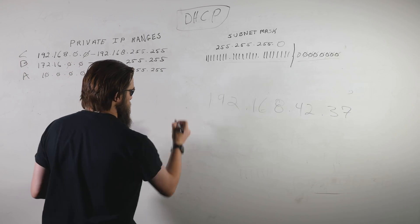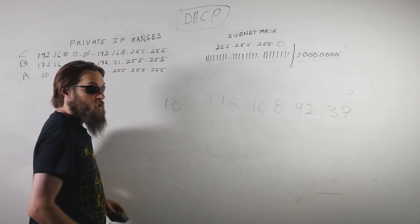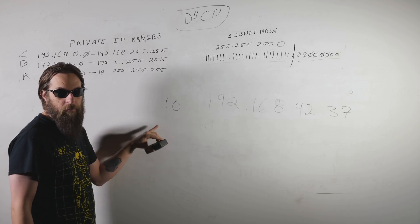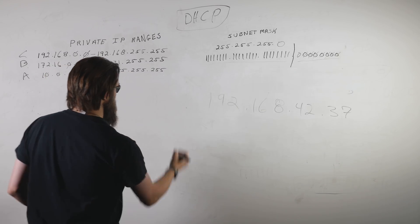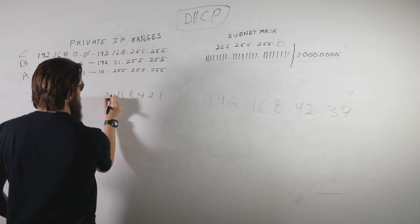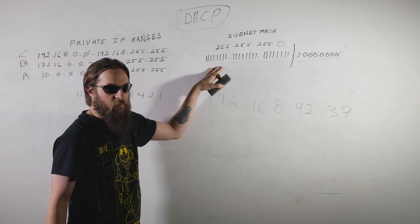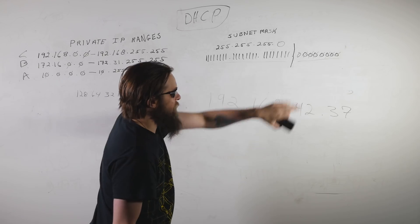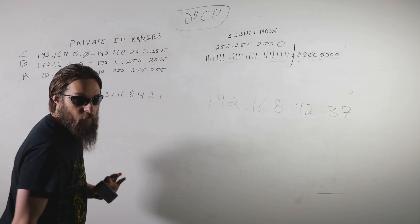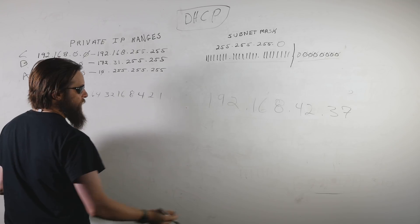In a binary numbering system we have only zero and one, which means the next place value is two — it's the ones place and the twos place. As the joke goes, there are 10 types of people: those who understand binary and those who don't. The columns increase exponentially: ones, twos, fours, eights, sixteens, thirty-twos, sixty-fours, one-twenty-eights. We stop at eight because that's how many bits we have in each octet — the four segments of an IPv4 address.